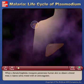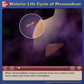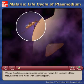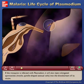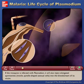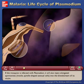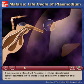When a female Anopheles mosquito penetrates human skin to obtain a blood meal, it injects saliva mixed with an anticoagulant. If the mosquito is infected with Plasmodium, it will also inject elongated sporozoites, modal spindle-shaped asexual cells, into the bloodstream of its victim.